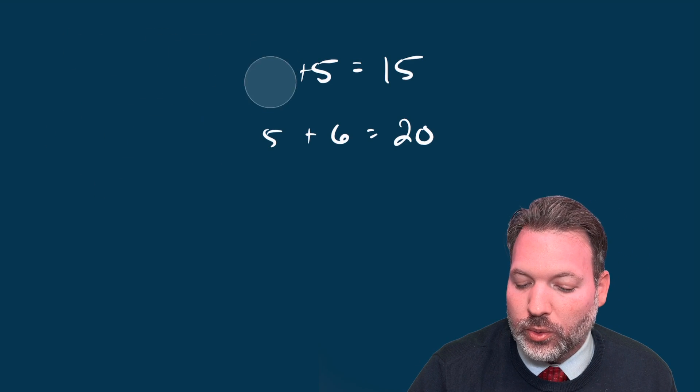And this doesn't only work with five. Any odd number of these consecutive integers added together will always be a multiple of that odd number, whatever the number of consecutive integers you added together. Seven consecutive integers always adds up to a multiple of seven. 11 consecutive integers always adds up to a multiple of 11.